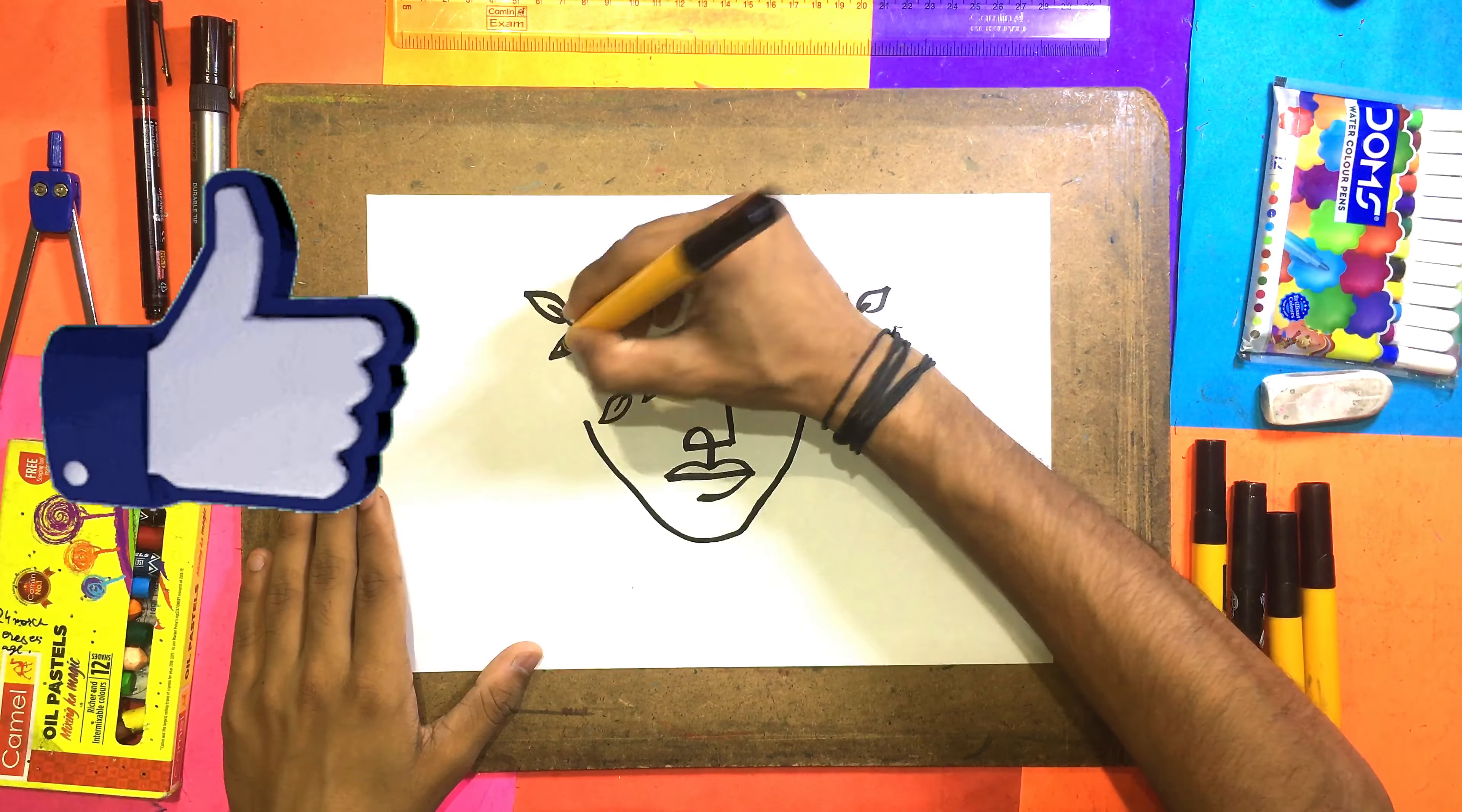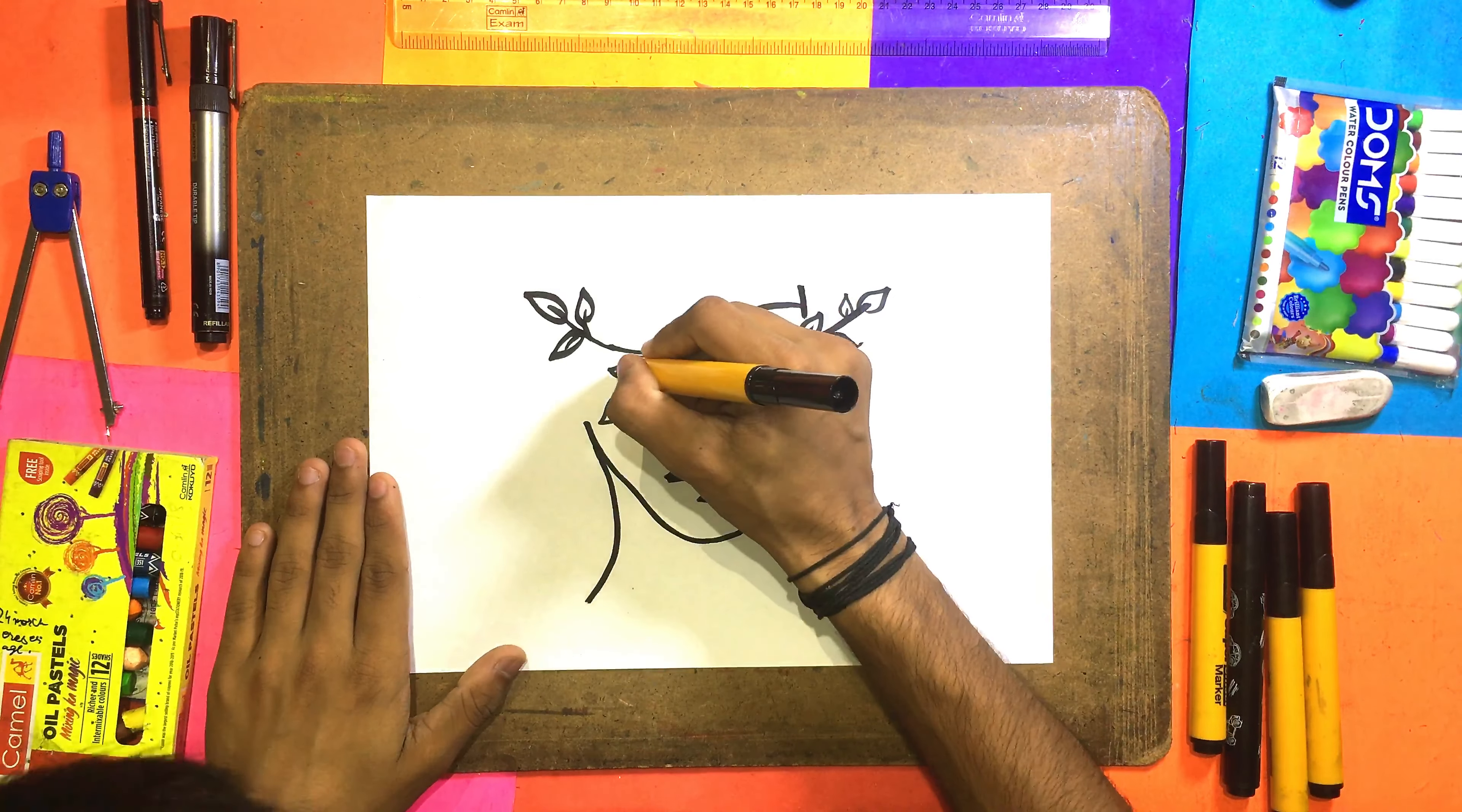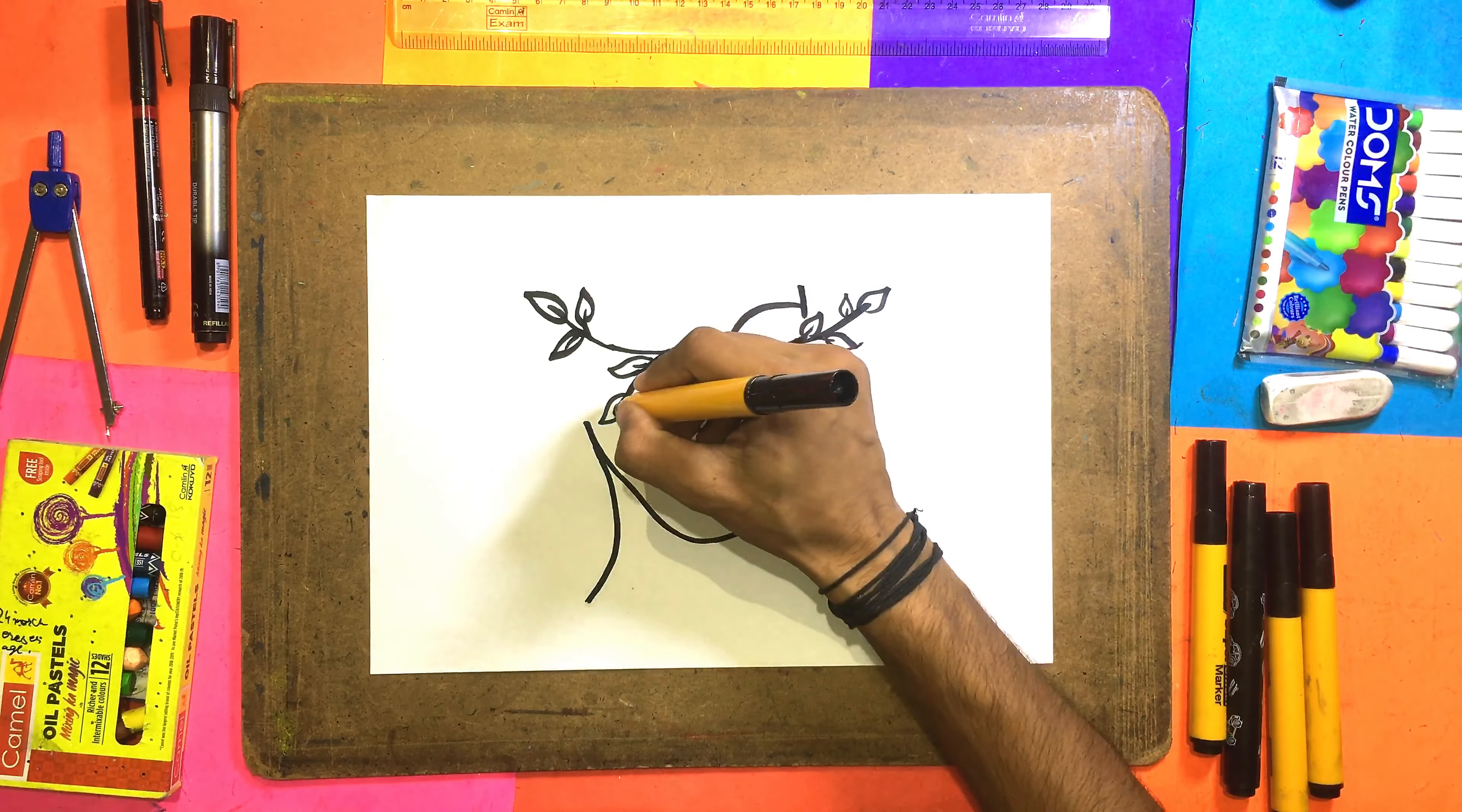Here we are going to make this line. We will make this line. We will make leaves here. Here we will make this line. Now we will make this line.